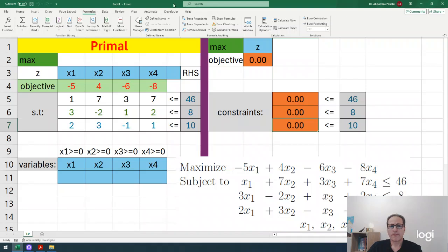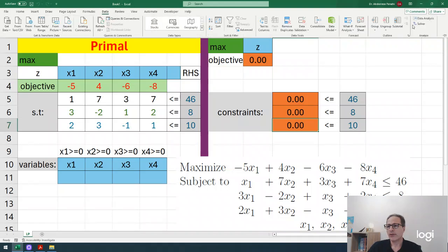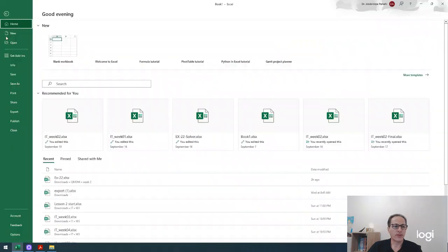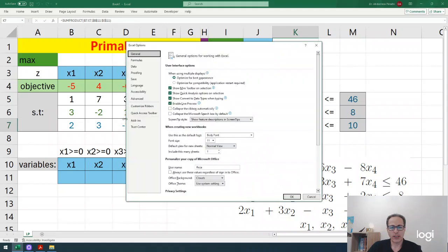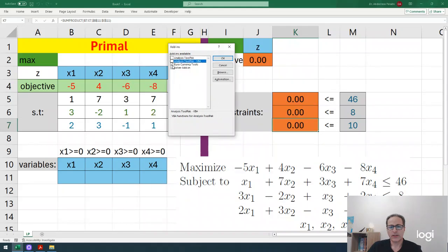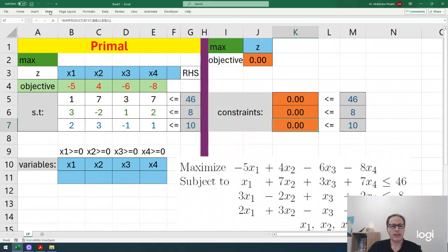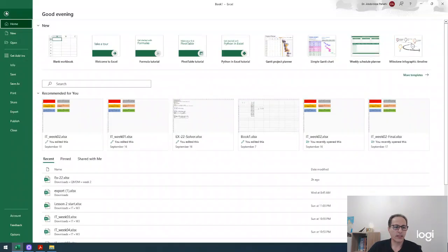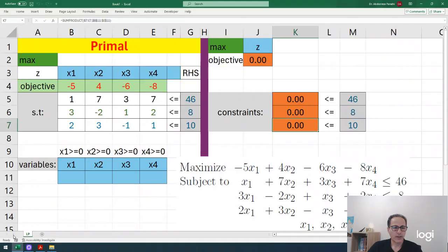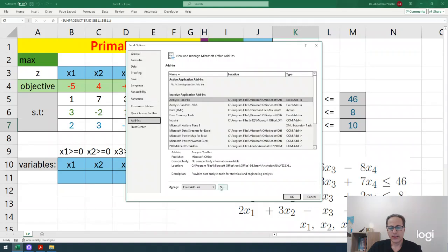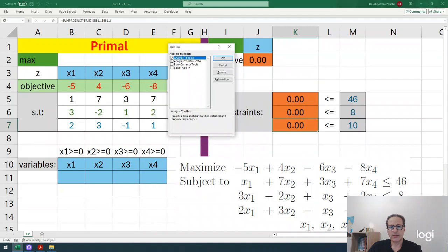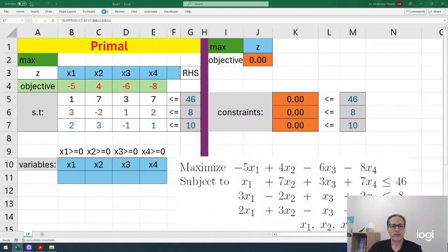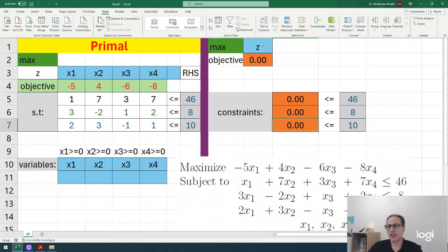Now we're ready to use Solver. If you go to the data menu and don't see Solver at the end, go to options. I'll remove and bring it back. Once removed, if I go to data, we don't see Solver. Go to options, add-ins, click go, and check Solver add-in. Now if I go to data menu, I see Solver there.